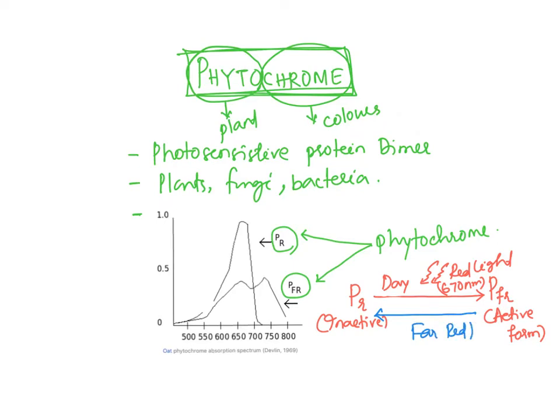PFR has a different wavelength; based on its frequency, the energy will be less and it reverts to the inactive form PR. So the phytochrome pigment converts from PR to PFR during the day by absorbing red light, and during night PFR reverts back to PR.